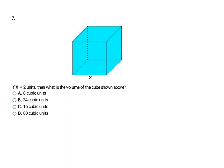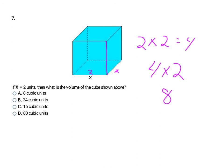This problem asks for the volume of a cube where X = 2. Since it's a cube, every edge is 2. The area of the base is length times width = 2 times 2 = 4, then times the height of 2 gives 4 times 2 = 8 cubic units, making the final answer A.